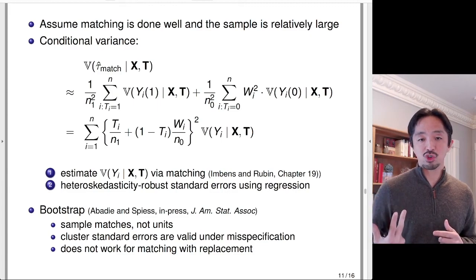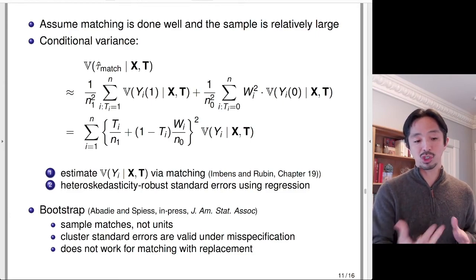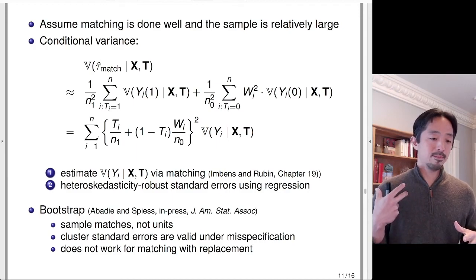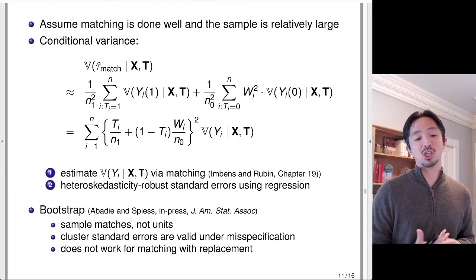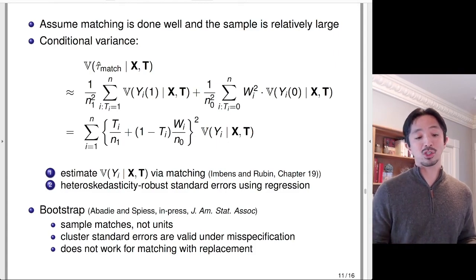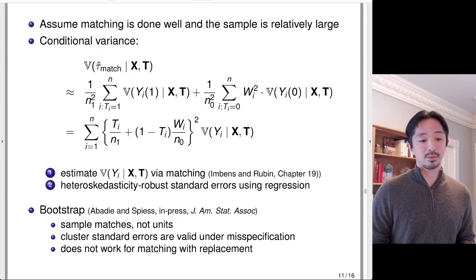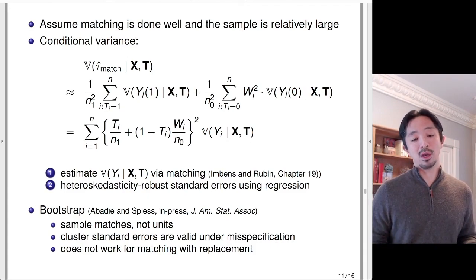In sum, variance calculation for matching is somewhat complicated. The easiest strategy is to treat matching as a pre-processing step, condition on the matched sample, and use usual heteroskedasticity-robust analysis — the only issue being that it doesn't account for uncertainty about the matching itself. You could bootstrap by resampling matches, which allows more flexible variance estimation, or use cluster standard errors treating matches as clusters, which is robust to model misspecification. With matching with replacement, bootstrapping doesn't work either, making standard error computation considerably more complicated.